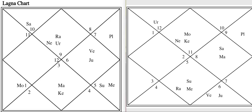You can get this chart from Jagannath Hora (JHora), which has been designed by PVR Narasimha Rao. He is an extremely learned astrologer and has very kindly made that software available on the internet for free. You can also get the Tithi Pravesh chart there for free. It is available for Windows, and if you have a Mac, you can use software like WineBottler to run the exe file.